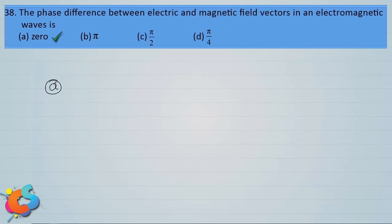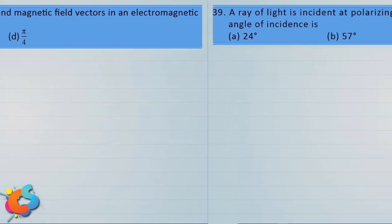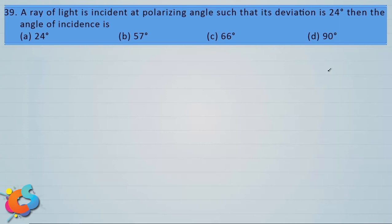A ray of light is incident at the polarizing angle such that its deviation is 24 degrees. The angle of incidence is: a) 24 degrees, b) 57 degrees, c) 66 degrees, and d) 90 degrees.